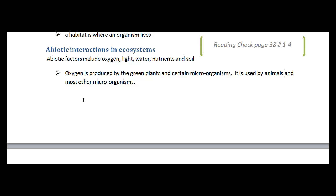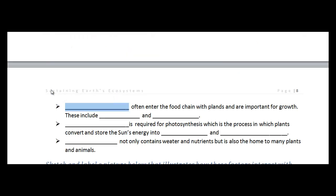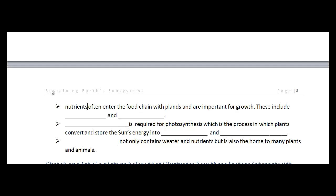The next one that's key to our ecosystems are nutrients. And nutrients often enter the food chain with, again, plants and are important for growth. So the nutrients specifically that we'll be focusing on include nitrogen and phosphorus.